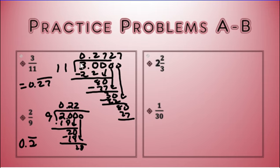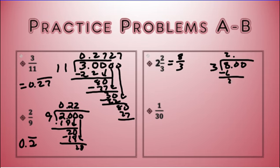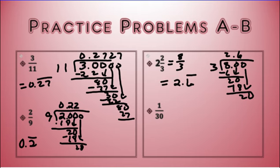Next: 2 and 2/3. As an improper fraction that would be 8 thirds. So it's 8.00 divided by 3. 3 goes into 8 two times. 3 times 2 is 6. Subtract and get 2. Bring down the 0. 3 goes into 20 six times. 6 times 3 is 18. Subtract and get 2. Bring down the 0 — you can see it's going to be the same. So 6 is repeating. This would be 2.6 repeating.